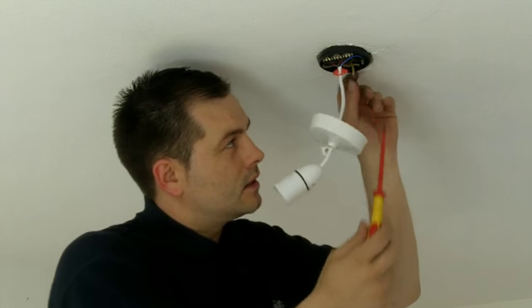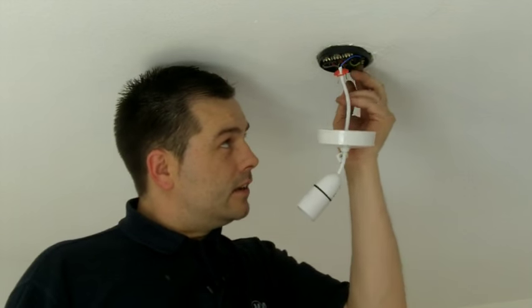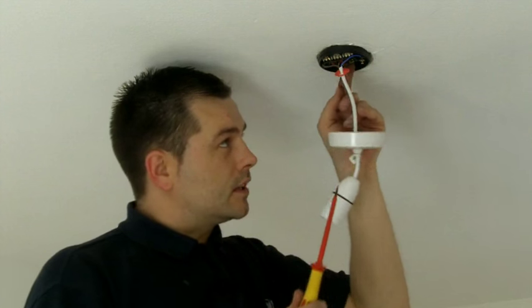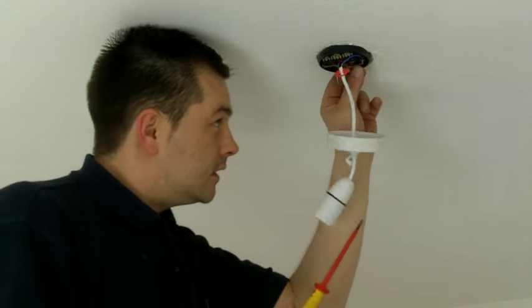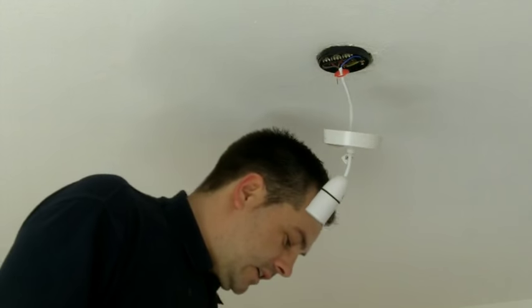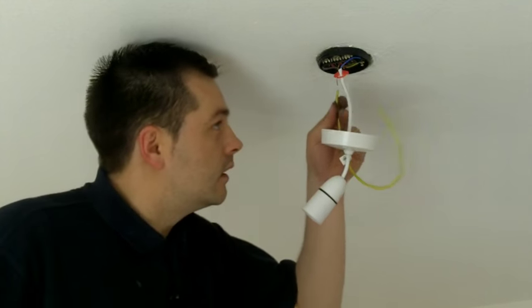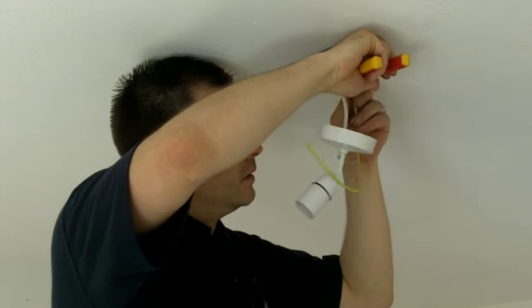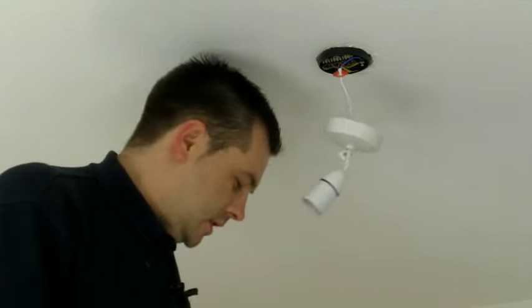Now, the very last to connect in this instance is the earth cable. And this is actually one of the most important cables in the light fitting. It means that in the event of an electrical fault, your electricity will disconnect, only if the earth cable is connected. So please ensure that the earth cable is actually sleeved with a green and yellow sleeving. And this is number one to identify the earth cable, and number two to also protect it from making contact with either the red or the black cables in the light fitting.